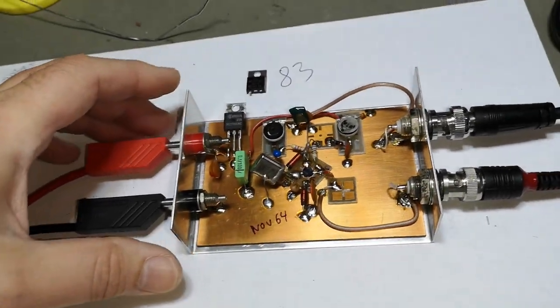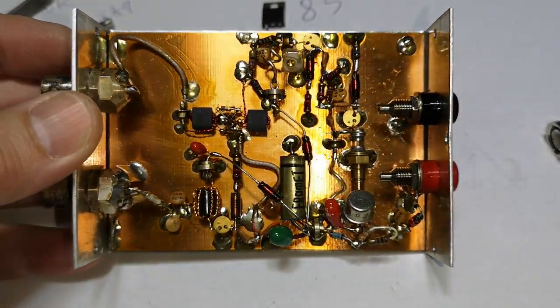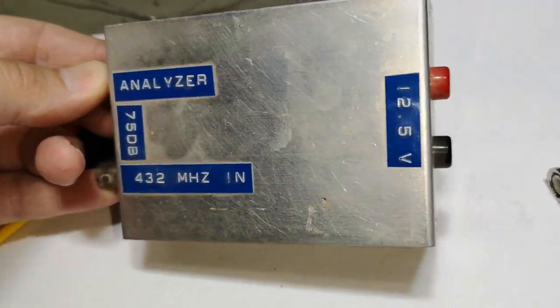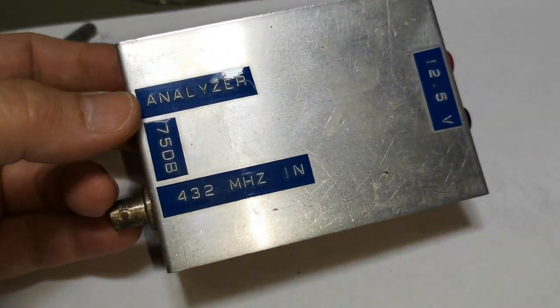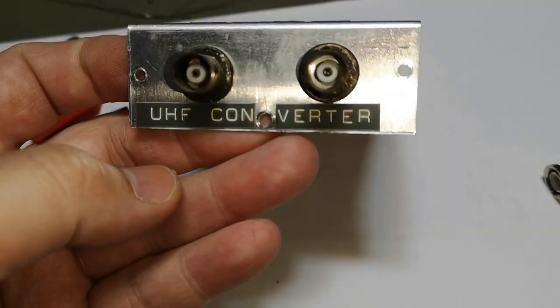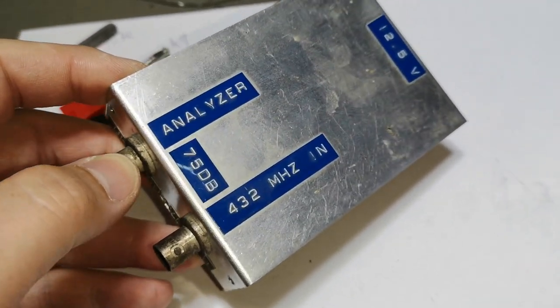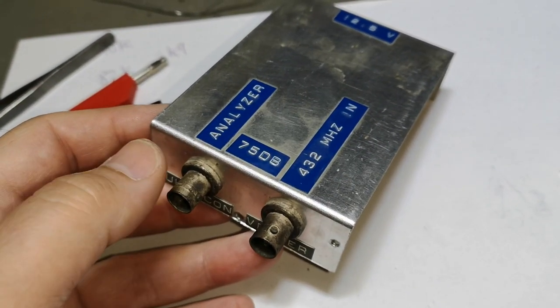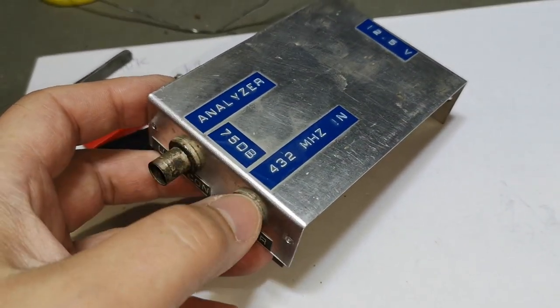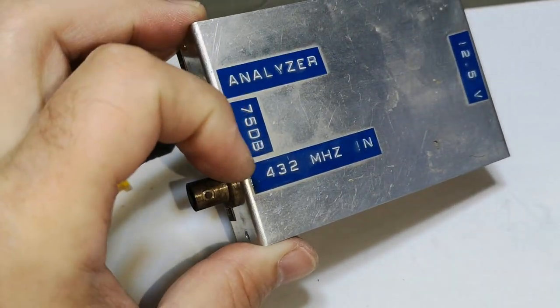That was sad. Let's play with the next one then. This one looks a lot more interesting. Let's look at the outside. There's actually a lot explained here. The power supply is 12.5 volts, analyzer, 432 megahertz input, 75 dB, and then UHF converter. Remember the spectrum analyzer I released a video about a few days ago? That one was 0 to 200 megahertz.